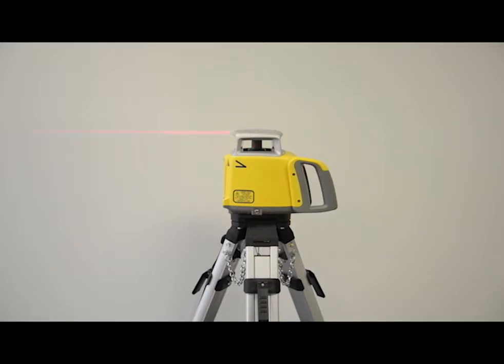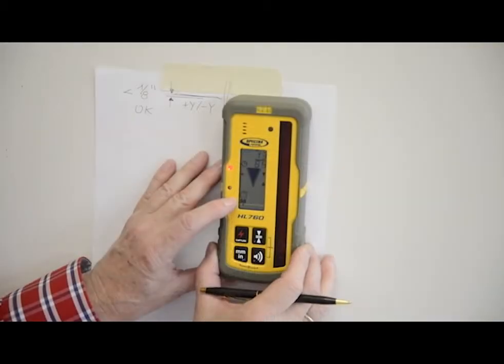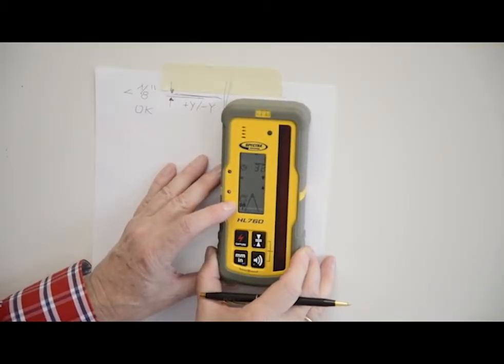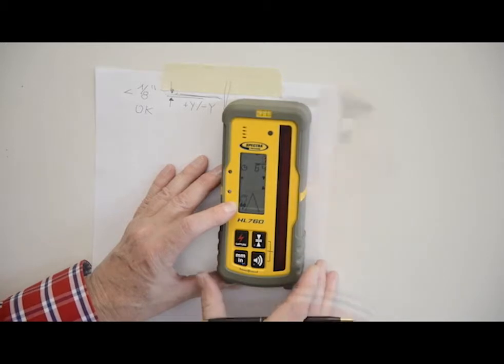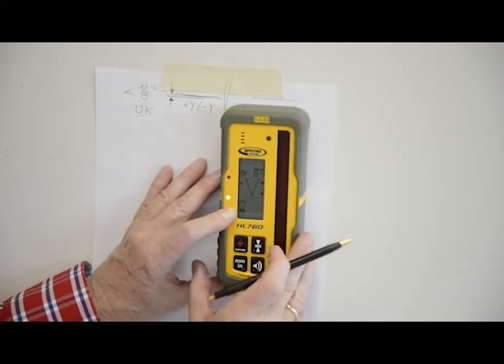After checking the Y axis, rotate the laser 90 degrees and the plus X axis is facing the wall. Raise or lower the receiver until you get an on-grade reading for the plus X axis and make a third mark on the wall.